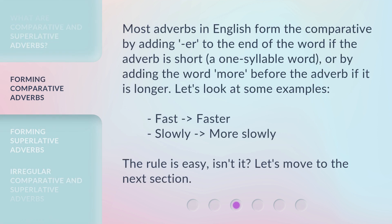Most adverbs in English form the comparative by adding -er to the end of the word if the adverb is short — a one-syllable word — or by adding the word 'more' before the adverb if it is longer. Let's look at some examples: fast to faster; slowly to more slowly. The rule is easy, isn't it? Let's move to the next section.